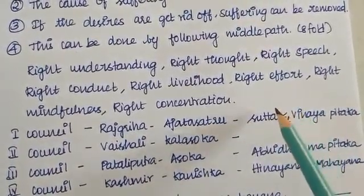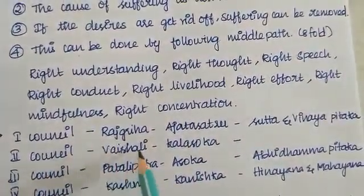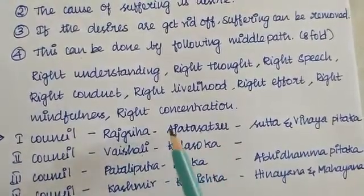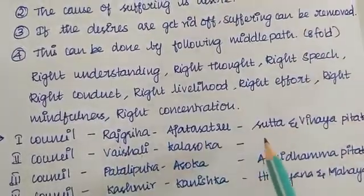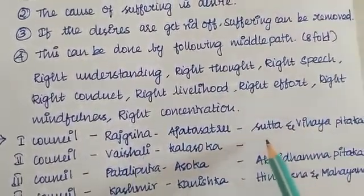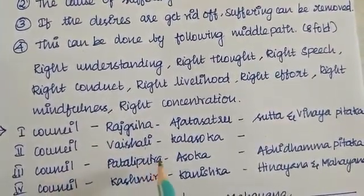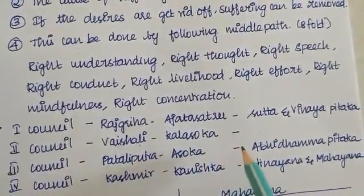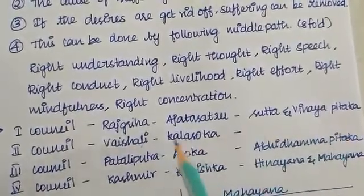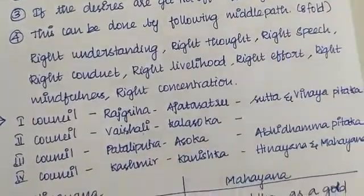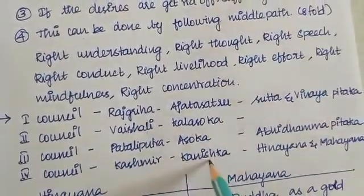This is the second council. The second council is Vaishali. Vaishali had a king. There was a dispute about monk distinctions — what is a monk and what is not a monk. The third council is called Ashoka. Ashoka is called Kadasi. This is Kadasi.